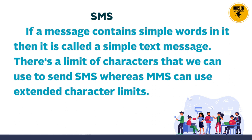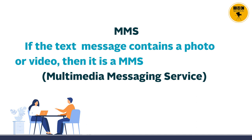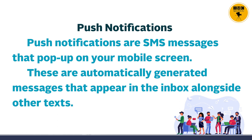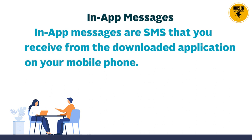Let's discuss the different types of SMS. First, a simple SMS: if an SMS contains simple words, it is called a simple text message. There is a limit on the number of characters we can use to send SMS. MMS, or multimedia messaging service, can be used with an extended character limit and contains a photo or video. Another type is push notification — these are messages that pop up on your mobile screen, automatically generated messages that appear in the inbox alongside other texts.